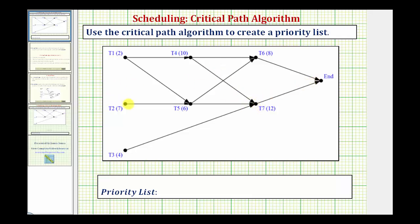Let's try from task two. Notice if we go from task two to task five, to task seven to the end, that would be seven plus six plus 12, or 25 hours. So if we can't find a path that takes longer, this path would be our critical path, taking 25 hours.